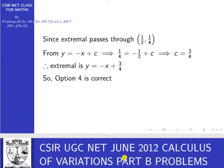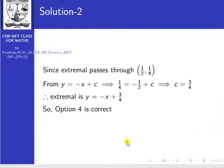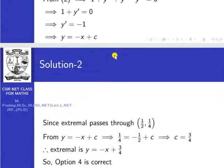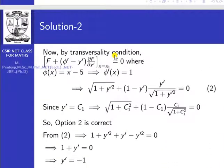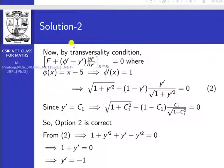Did you understand? All four options are correct. Note the special use of the transversality condition here — where pi-dash times y-dash equal to minus 1 is the key relation used. Thank you.